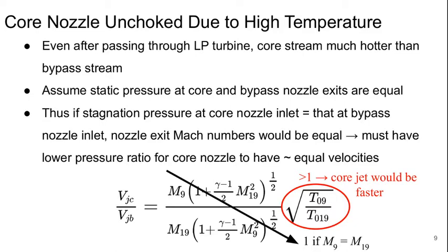Fundamentally, this is because of the fact that the flow of that stream out of the core is at a much higher temperature. Even after passing through the low pressure turbine, the core stream is much hotter than the bypass stream.